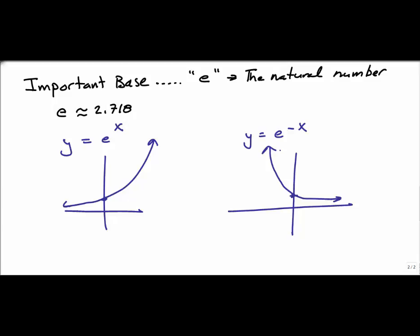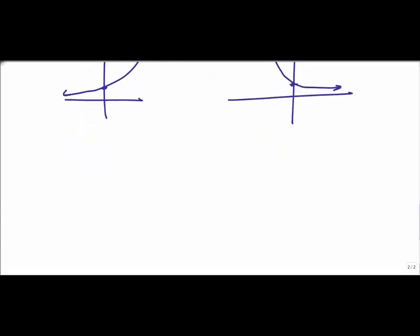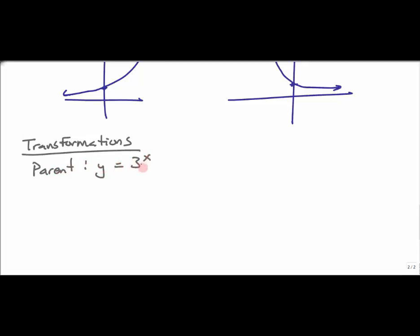In your homework, you'll be asked to graph transformations. All the transformation rules from other sections apply here too. Using y = 3^x as the parent function — it could be any base like 2, 7, or 8 — but note that 1^x is not exponential growth; it's a constant. We'll discuss that right after transformations.